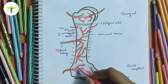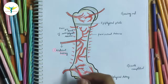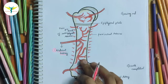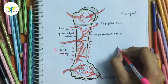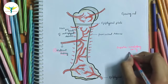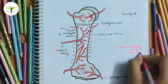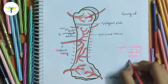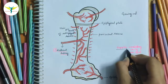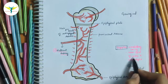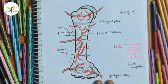The nutrient artery supplies the medullary cavity, the inner two-thirds of the cortex, and the metaphysis.